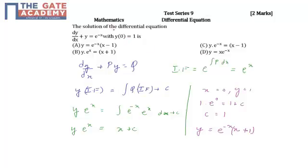Hello students, the following question is from test series 9, subject mathematics, chapter differential equation, and the question is asked for two marks. Question is: the solution of the differential equation dy by dx plus y equal to e raised to minus x with y of 0 is equal to 1 is.